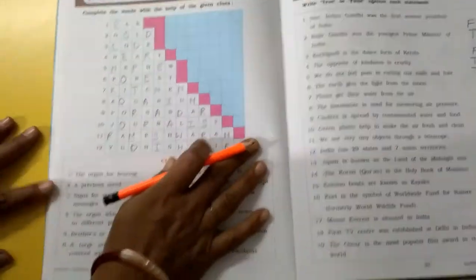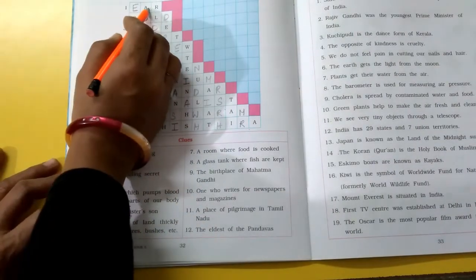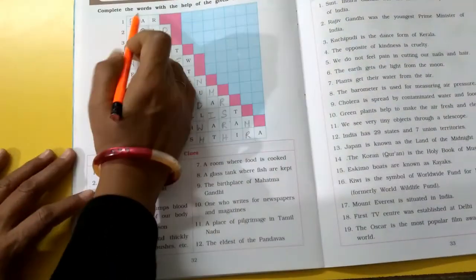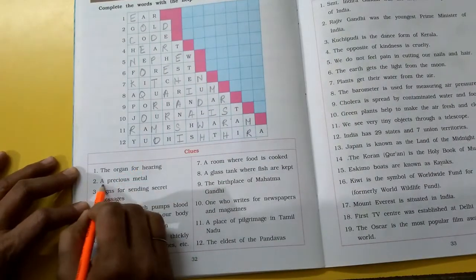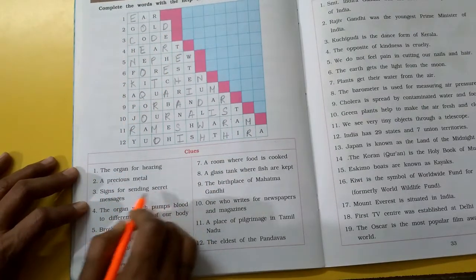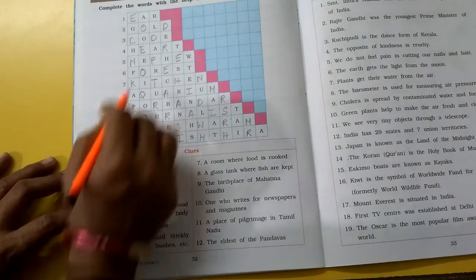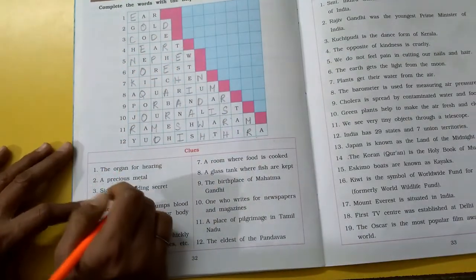You have to complete the clues in the given boxes. So our first one. Clues. The organ for hearing. Ear. E-A-R. This is our science organ which we use for hearing. A precious metal. Gold. Signs for sending secret messages. Code. Code are the signs for sending secret messages.